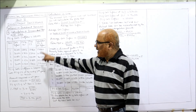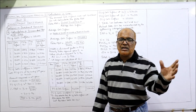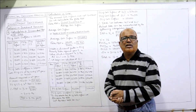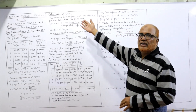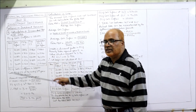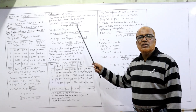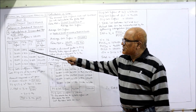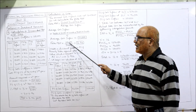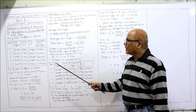Now we have to calculate the Internal Rate of Return (IRR). In this problem, the annual cash inflows are not constant — they fluctuate: 20,000; 30,000; 40,000; 50,000; 30,000. So we calculate a fake/imaginary PBP: initial investment divided by average cash inflow. Average cash inflow = total / 5 = 34,000. Fake PBP = 1,00,000 / 34,000 = 2.94.